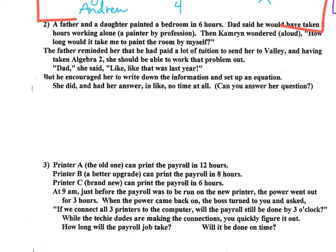A father and daughter painted a bedroom in six hours. Dad said he would have taken eight hours working alone. He's a painter by profession. Then Cameron wondered aloud, how long would it take me to paint the bedroom by myself? The father reminded her that he had paid a lot of tuition to send her to Valley, and having taken Algebra 2, she should be able to work that problem out. Dad said, oh, dad, she said, like that was last year. But he encouraged her to write down the information and set up an equation. She did and had her answer in, like, no time at all. Can you answer her question?